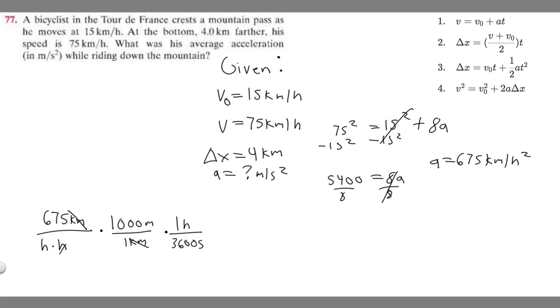And so this hour cancels with this, right? But keep in mind this is hour squared on the bottom, and we're going to have seconds squared on the bottom. So in order to get rid of this other hour, we have to do the same thing again. So we have another 1 hour for 3,600 seconds. So now this hour will cancel.